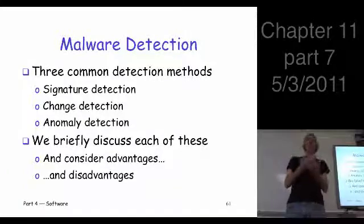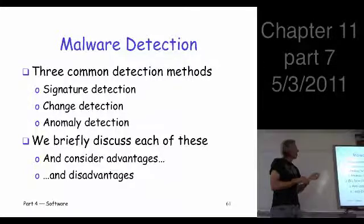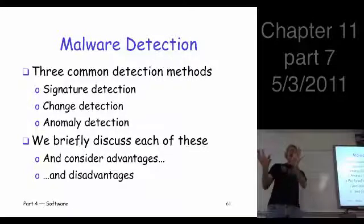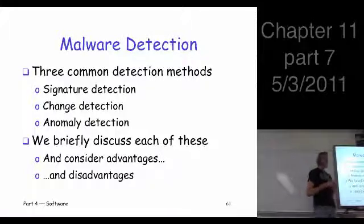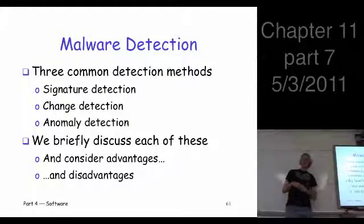So how do we detect malware? Let's turn this around. Let's be the good guys for a while and try to detect these malware problems. There are three techniques that are widely used, and variations on these as well, with other techniques used in combination. The basic techniques are signature detection, change detection, and anomaly detection. We're going to look at each of these and compare the advantages and disadvantages.